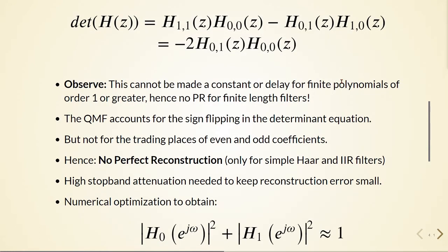So the QMF accounts for the sign flipping in the determinant equation, but not for the trading places of even and odd coefficients.